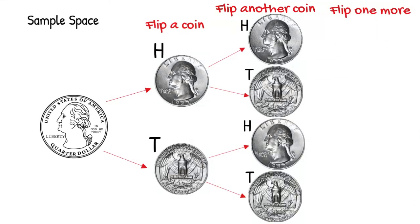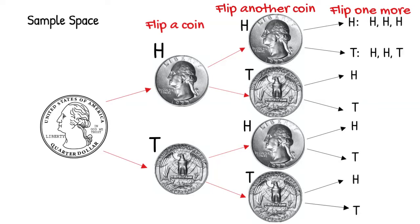If we flip one more time, it will land on heads or tails. Following our sample space, we get heads heads heads, heads heads tails, heads tails heads, heads tails tails, tails heads heads, tails heads tails, tails tails heads, and finally tails tails tails.